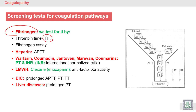To screen fibrinogen, we use a test called thrombin time, similar to PT and PTT. Thrombin time is the screening test for the common pathway. After that, we perform factor assays including fibrinogen quantitation.